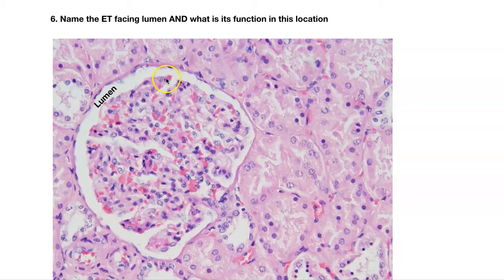Number six. You've seen a similar slide. Name this epithelial tissue facing the lumen — this is so beautiful. This is simple squamous. This is the kidney — specifically a glomerulus. We are taking blood and filtering it to start making urine. So the function of this simple squamous is filtration.